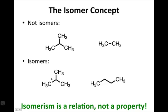Just to give you a little teaser: it makes no sense to say that a molecule is an enantiomer or is a diastereomer. What you should say instead is that a molecule is a diastereomer of another molecule, or a molecule is an enantiomer of another molecule.